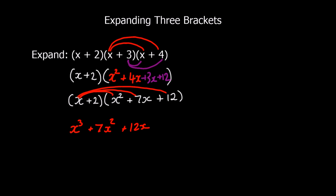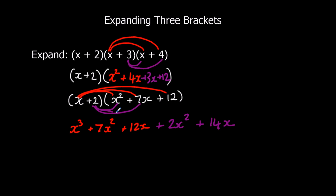We've done x times them all, now we're going to times them all by 2. So 2 times x squared is 2x squared, 2 times 7x is 14x, and 2 twelves is 24.